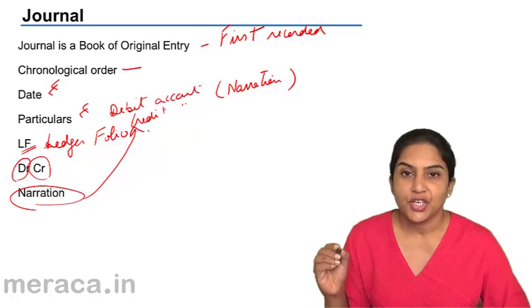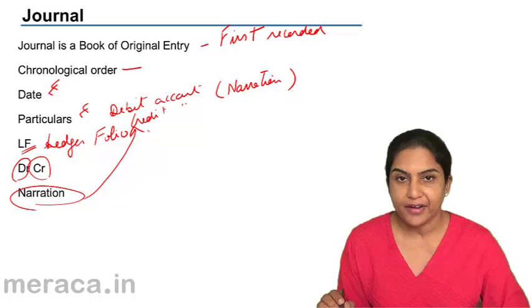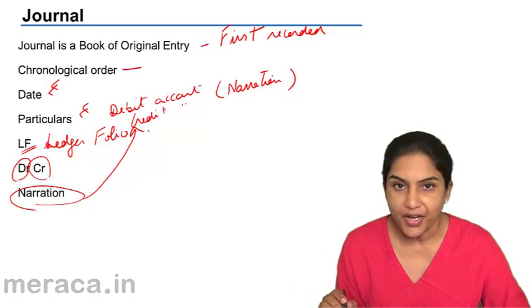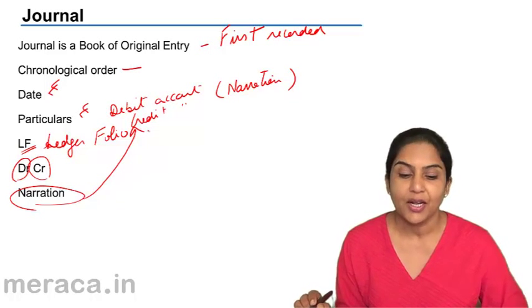So what is a journal? A journal is a book of original entry wherein all business transactions are first recorded in a chronological manner.